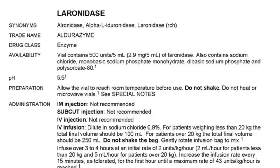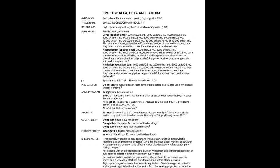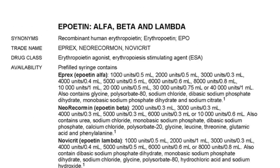It is important to note that the book does not provide information on brand or product equivalents. Sometimes similar drugs are included in the same monograph. An example is the epoetins — epoetin alpha, beta, and lambda are very similar, but they are not interchangeable.